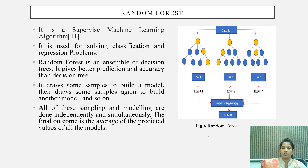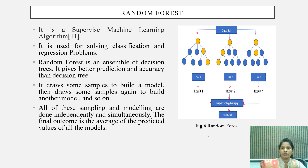Random forest is also a supervised machine learning algorithm, used for solving classification as well as regression problems. A random forest is an ensemble of decision trees. Therefore, it gives better prediction and accuracy than a single decision tree. It draws samples to build a model, then draws samples again to build another model, and the process continues. All sampling and modeling are done independently and simultaneously. The final outcome is the average of predicted values of all the models.